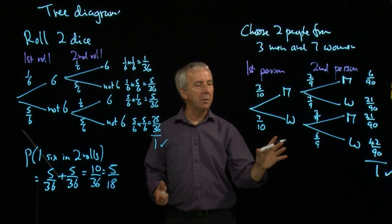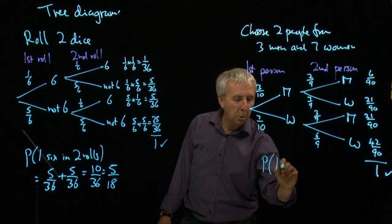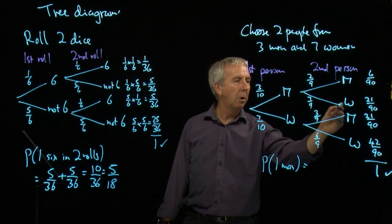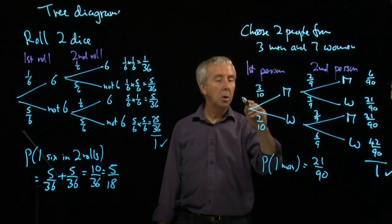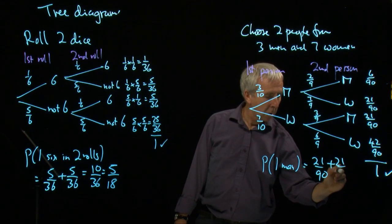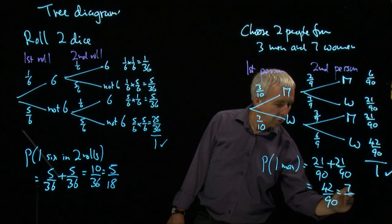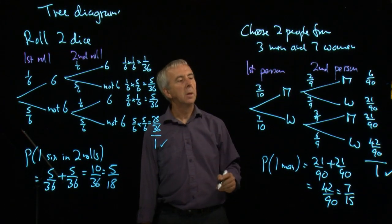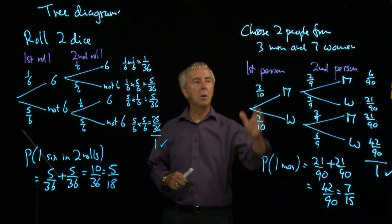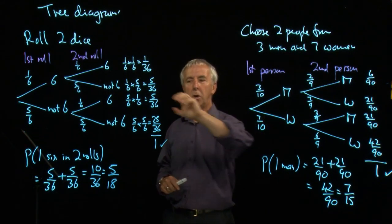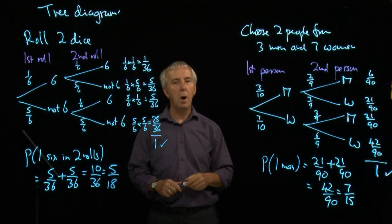And now let's again see what happens if we want a particular number, but we're not worried what order. The probability that we get one man, but it could have been that branch, twenty-one-ninetyths, or this branch, and or means plus. So in this case we get forty-two-ninetyths, which cancels to seven-fifteenths. And so the tree diagrams are a very useful way of organizing the information and of noting when successive probabilities change or when they don't, multiplying along the branches and adding all the branches that give the required outcome.